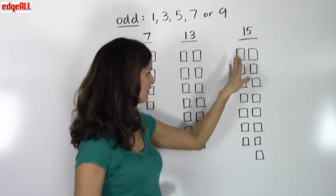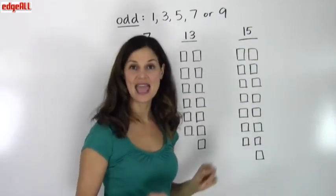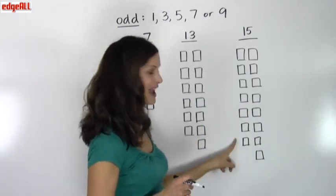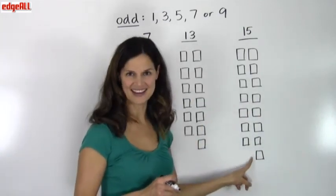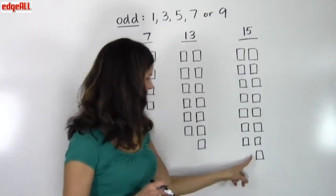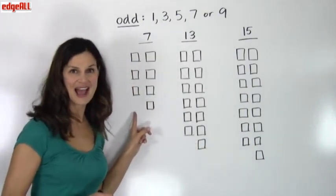And if we try to take 15 objects and pair them up, we'll get 7 pairs and we'll get 1 left over. And this is where we get the phrase, odd 1 out.